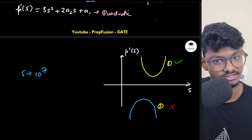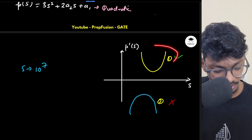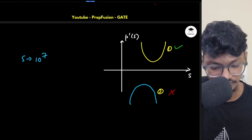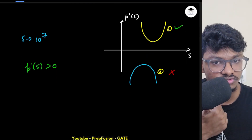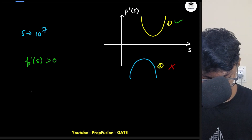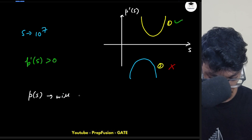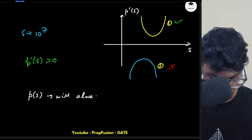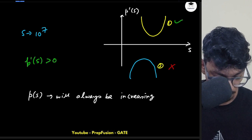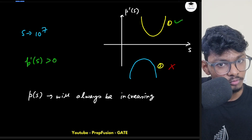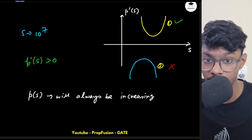From this I can observe that the derivative p'(s) is always positive. If the derivative is always positive, my function p(s) is always increasing — it is monotonically increasing. I have taught this in my basics of calculus lectures, which you can check out.